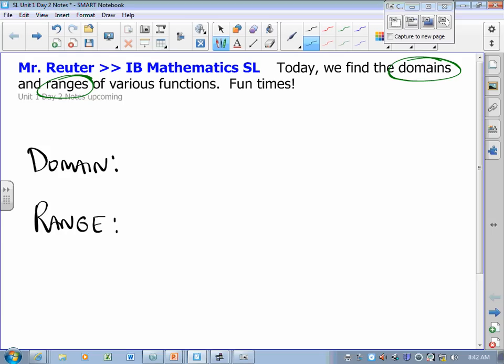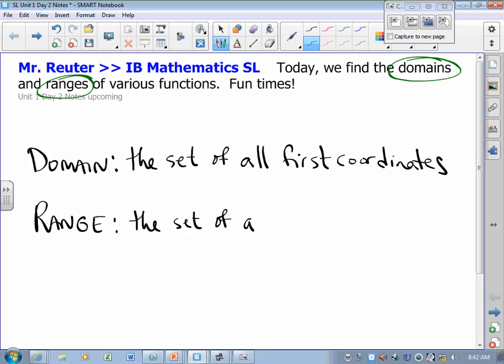Two definitions. The domain of a function is the set of all first coordinates. The range is the set of all second coordinates.